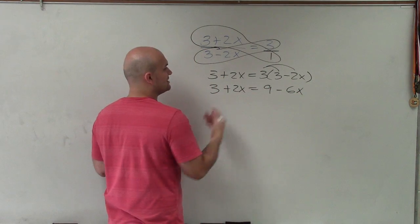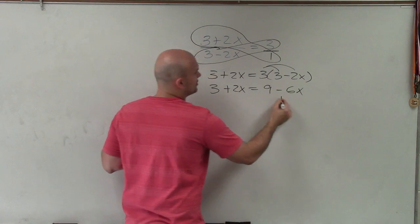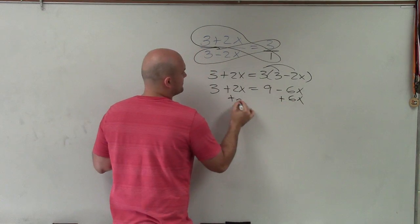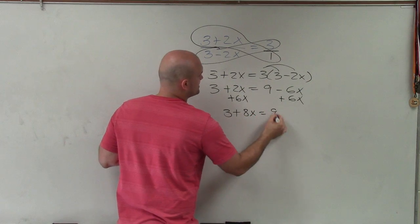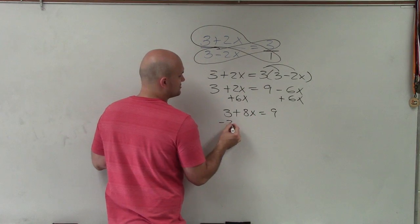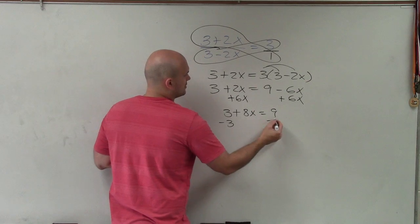Now to solve for x, I need to get the variables to the same side. So I'll add 6x to both sides. And I have 3 plus 8x equals 9. Now to solve for x, I subtract 3, subtract 3.